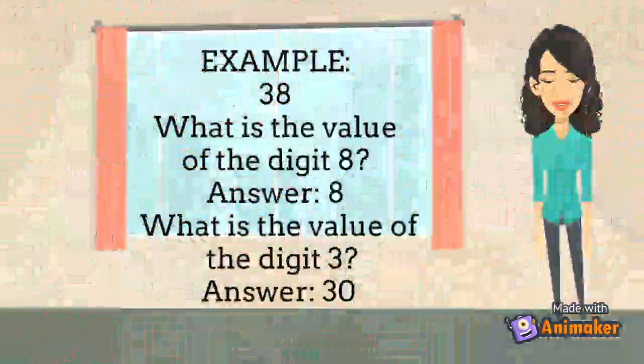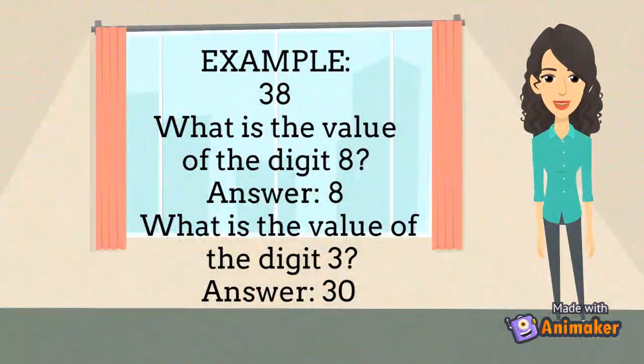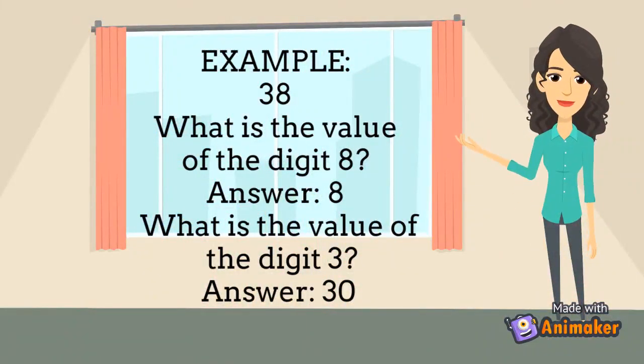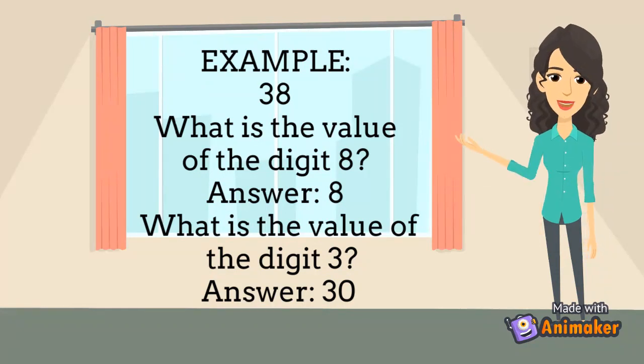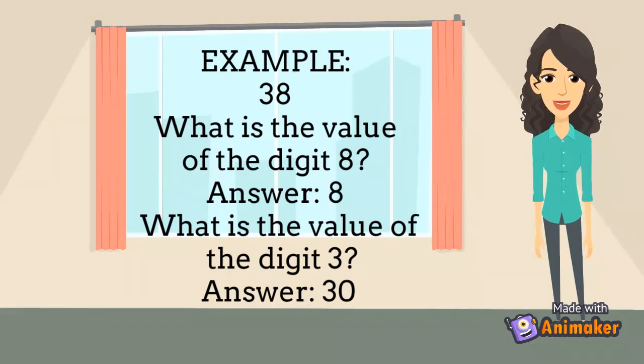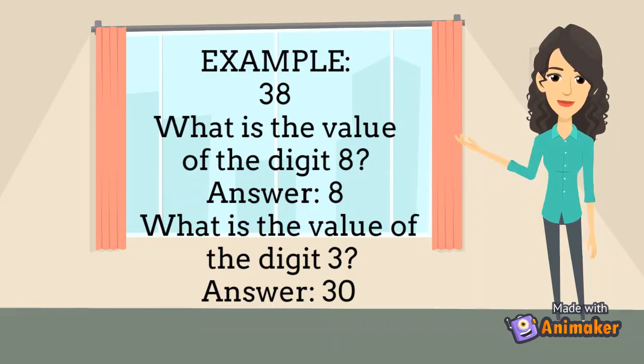For example, the number is 38. What is the value of the digit 8? The answer is 8. What is the value of the digit 3? The answer is 30 because 3 is in the tens place. 3 tens equals 30.